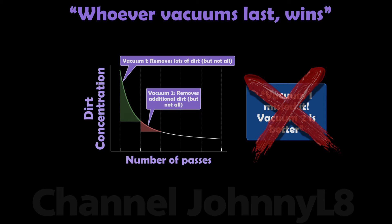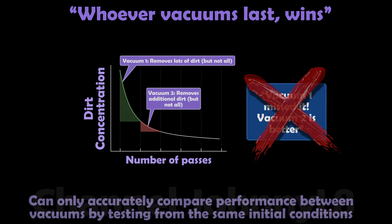you know they've fallen victim to a misunderstanding of the statistical process of particle extraction from a carpet. You can only accurately compare performance between vacuums by testing from the same initial conditions — i.e. concentration, particle size distribution, and particle distribution within the pile on a similar carpet. Any other test is just not comparing apples with apples. Ultimately, only industry standard testing is relevant because that is done formally and rigorously to set standards, and I'll discuss this in another video.